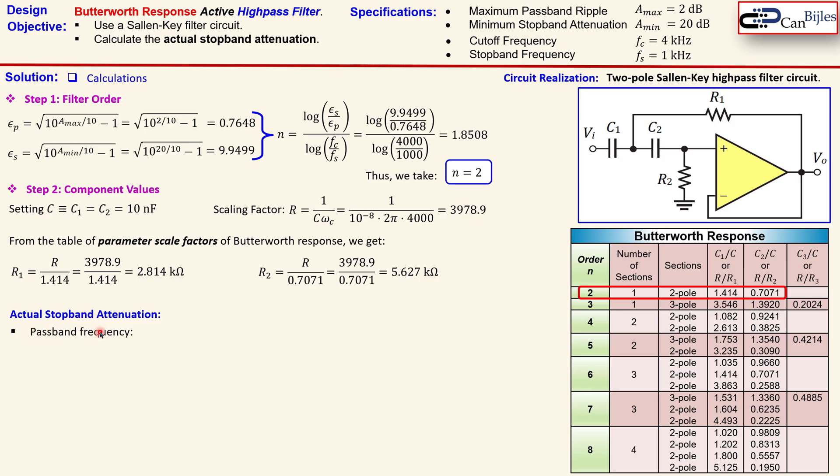Okay, now the actual stopband attenuation. For that we start first with the passband frequency. This frequency is important to understand that we have a 2dB attenuation at that specific frequency which we will now calculate. So this passband frequency for the high pass filter is given by this formula. You see the passband frequency Fp = cutoff frequency Fc times epsilon_p^(-1/n). So for the low pass filter it was actually to the power plus 1/n, so just note the minus sign.